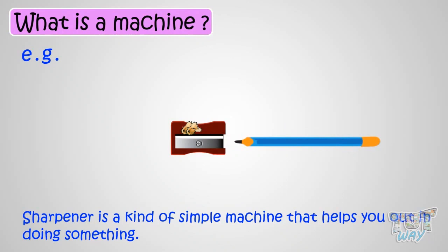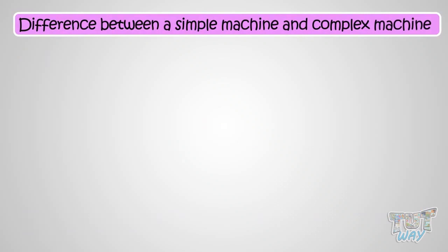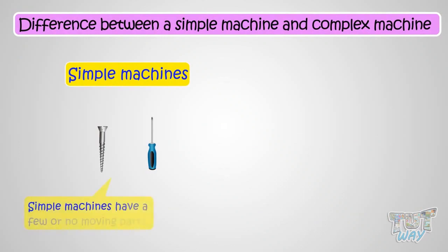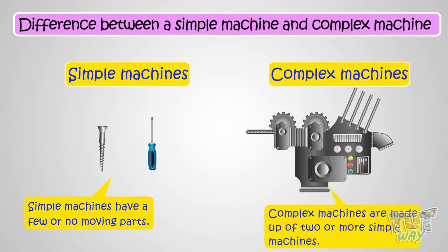Now let's first see what is the difference between a simple machine and a complex machine. Simple machines are those structures that have a few or no moving parts, while complex machines are made up of two or more simple machines working together as a single machine.